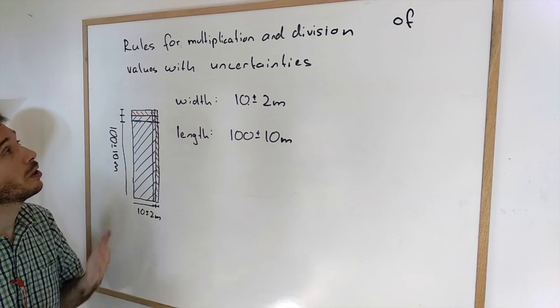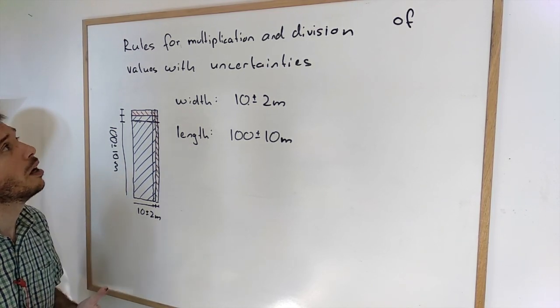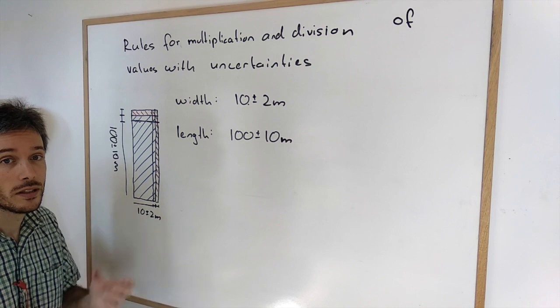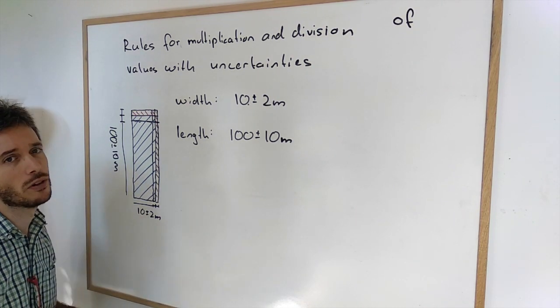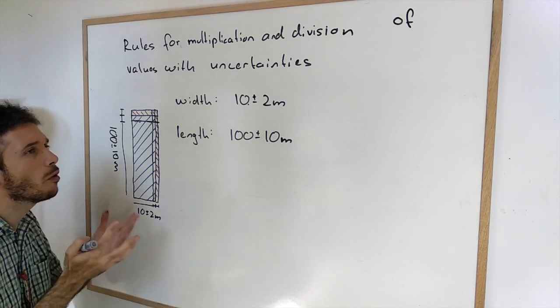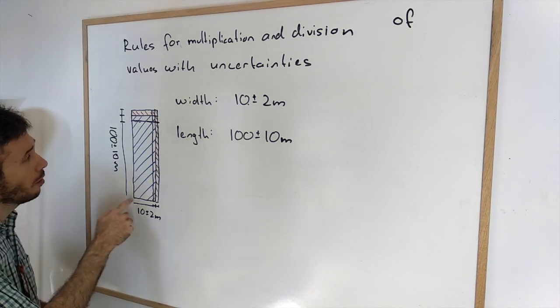If you're multiplying or divide values with uncertainties, we use another rule. Remember when we added and subtracted them, we added the absolute uncertainties. For multiplying, this won't work.